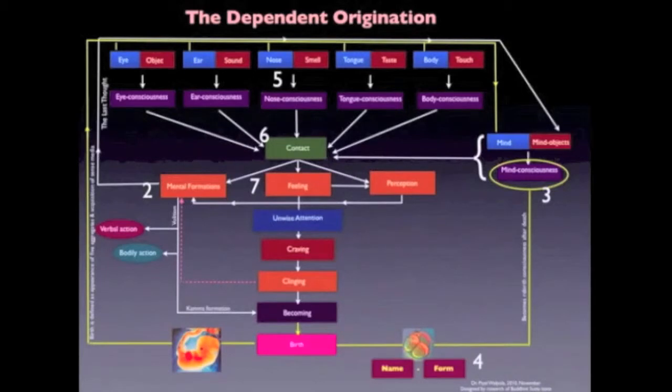We are now entering what you might consider the processing unit of this causal matrix and exposing some of its various feedback loops. The first of these loops is found between mental formations, feeling, and perception. And there are more to be found as we continue along the chain.